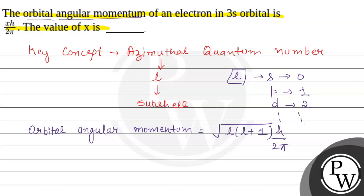Here we can see the orbital given is 3s. So 3s orbital is given to us. For s orbital, the azimuthal quantum number value is 0 only.